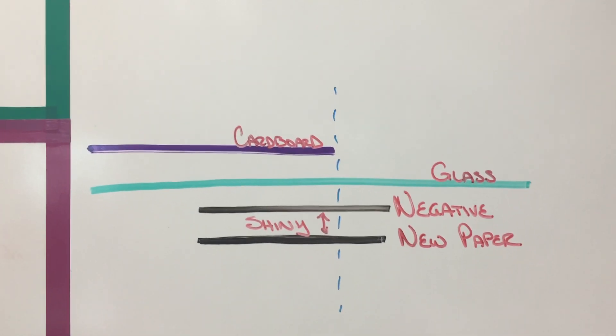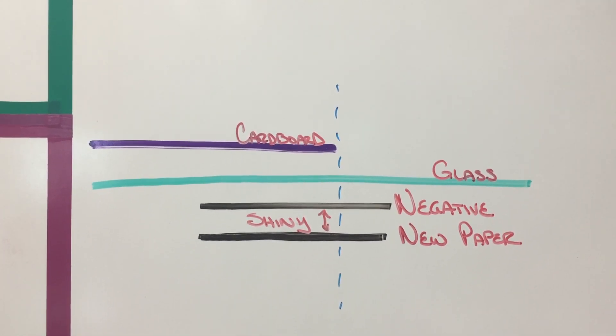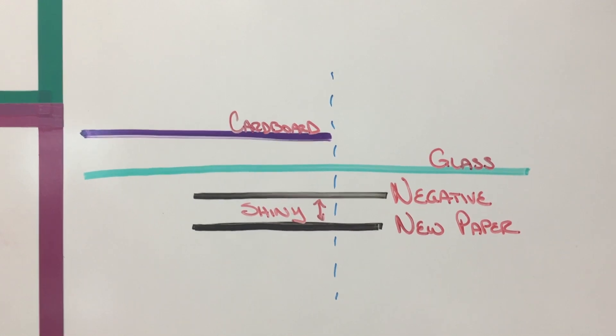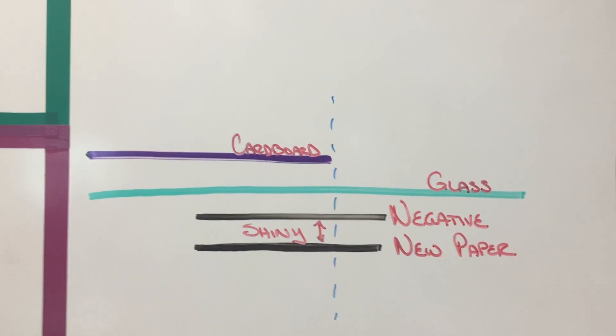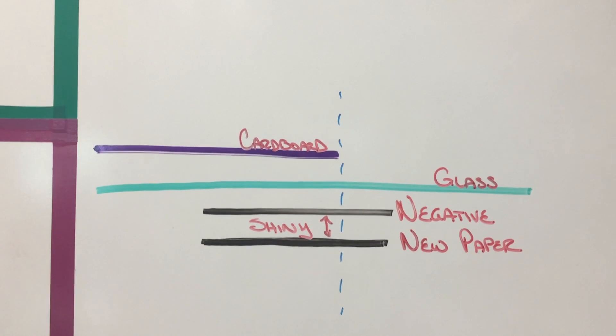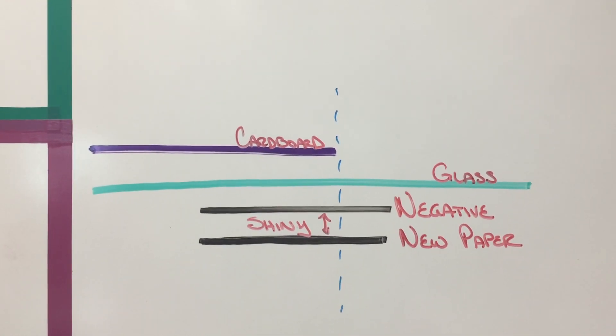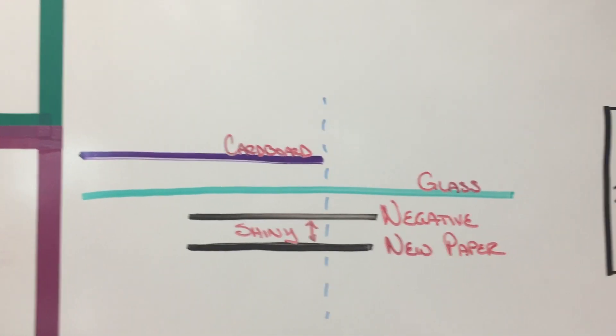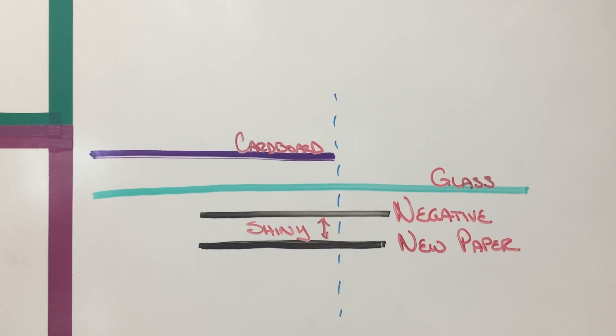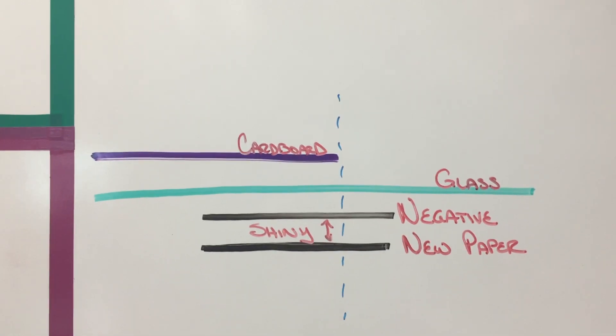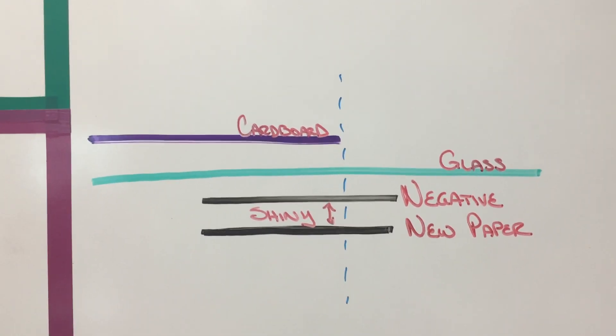Remember it's important that the light pass through the negative in order to make the positive. You're going to have a piece of glass on top of that and you want to make sure the glass is clean and then a piece of cardboard on top of the glass. You'll notice I have the cardboard set off a little bit maybe about an inch off from the edge of the paper.